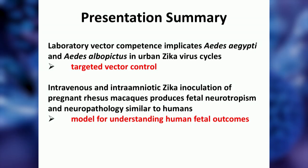In summary, laboratory vector competence studies implicate Aedes aegypti and Aedes albopictus in Zika virus urban transmission cycles, meaning vector control can be targeted to those species — and will hopefully reduce chikungunya and dengue simultaneously, since they share the same vectors. The macaque work shows that pregnant rhesus macaques inoculated IV and intra-amniotically produce fetal neurotropism and neuropathology similar to what has been seen in humans, making this a potentially valuable model for understanding human fetal outcomes.